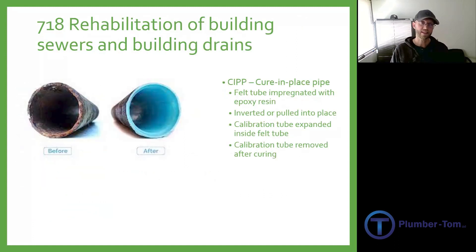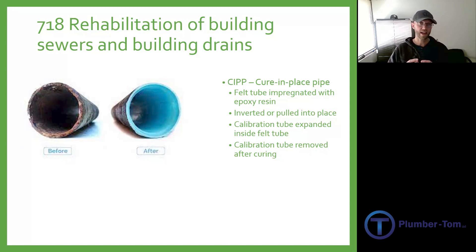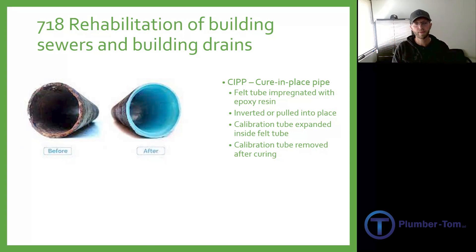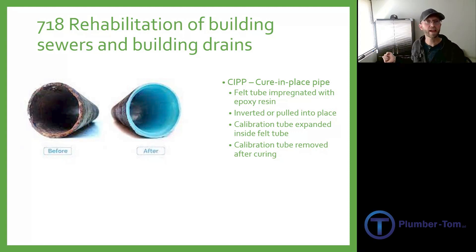Section 718.7 covers rehabilitation of building sewers and building drains using a cure-in-place pipe method. A felt tube containing epoxy is pulled in or inverted into the pipe. A calibration tube — basically a long balloon — goes inside and is inflated, pushing the epoxy against the walls of the pipe. It cures in place and the calibration tube is pulled back out, leaving the new epoxy lining adhered to the inside of the existing pipe.